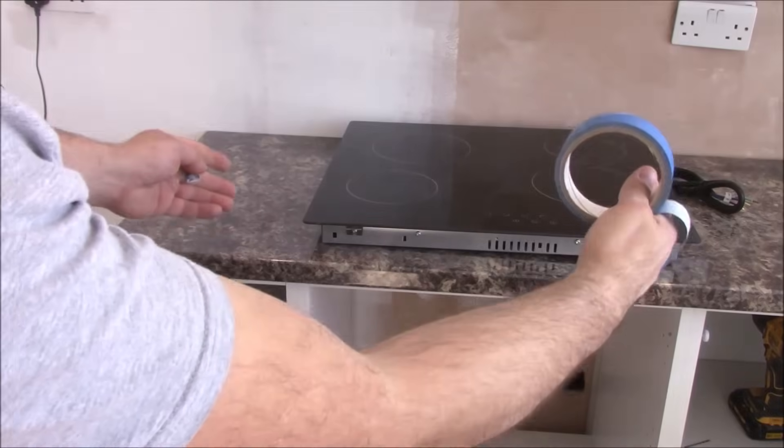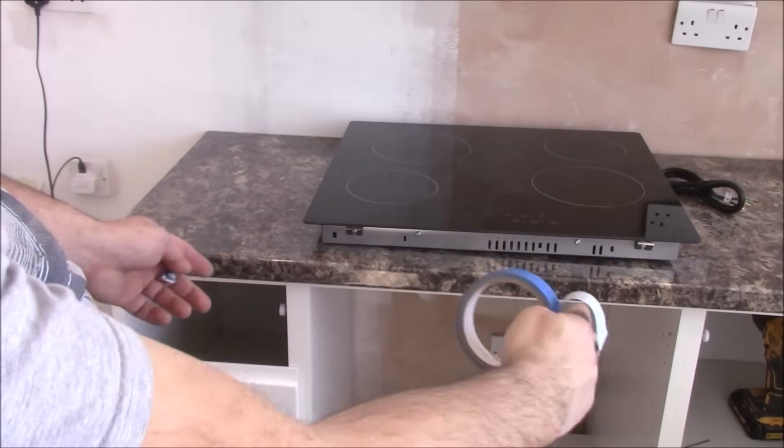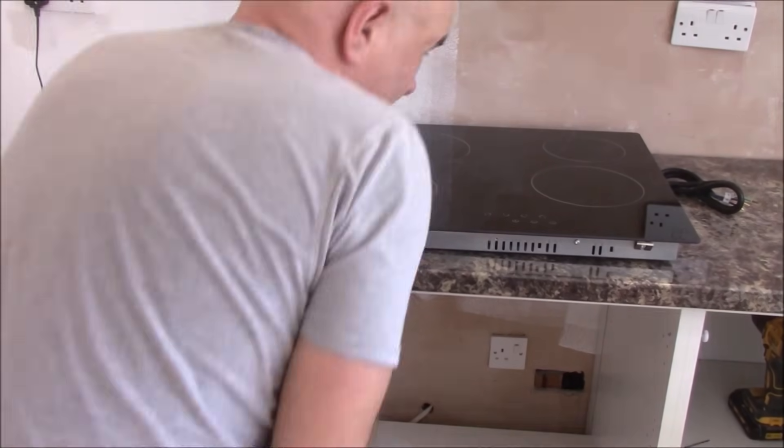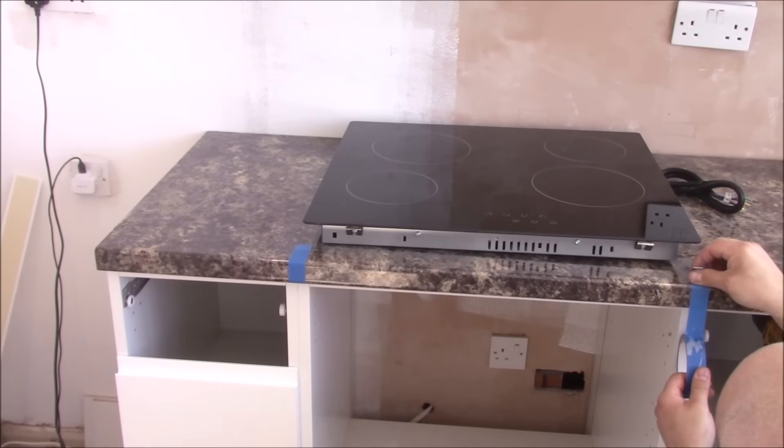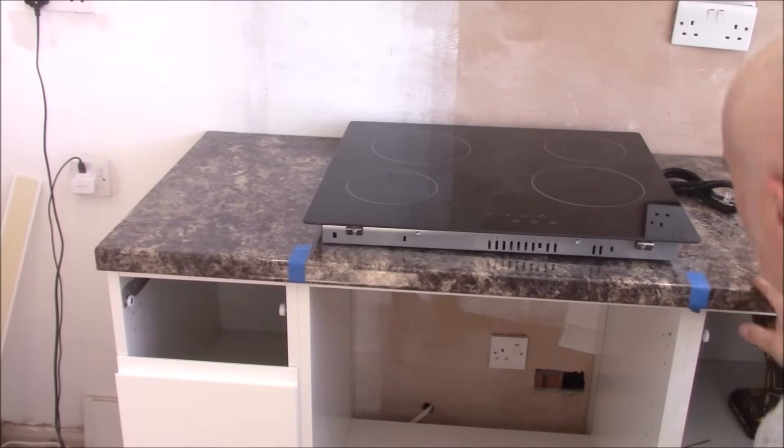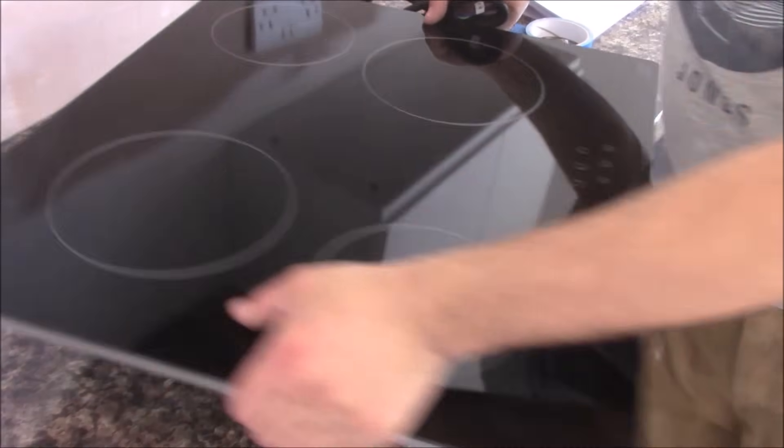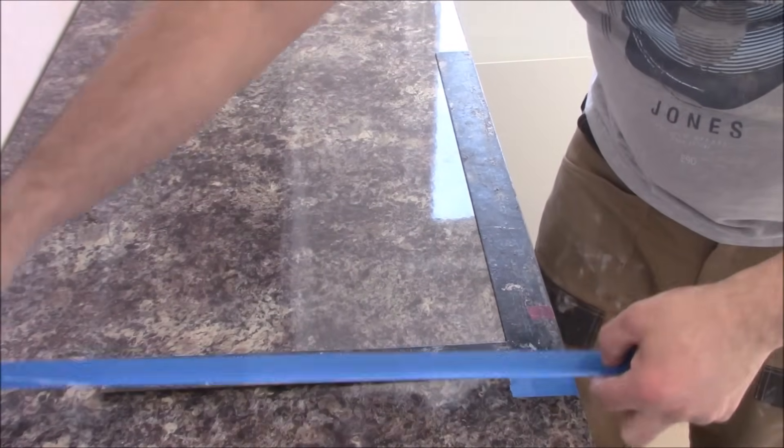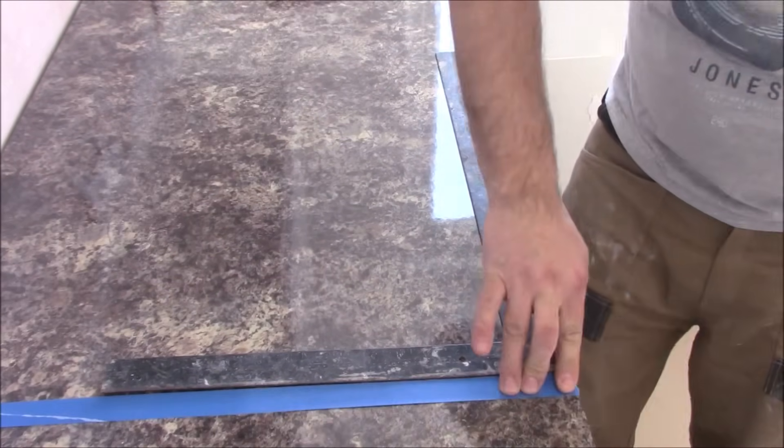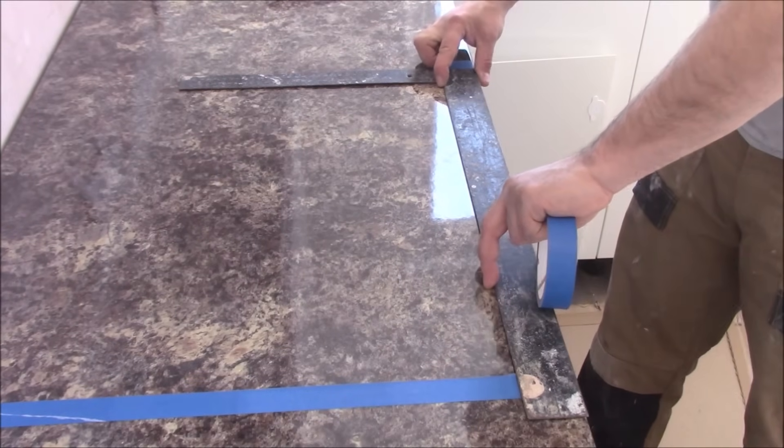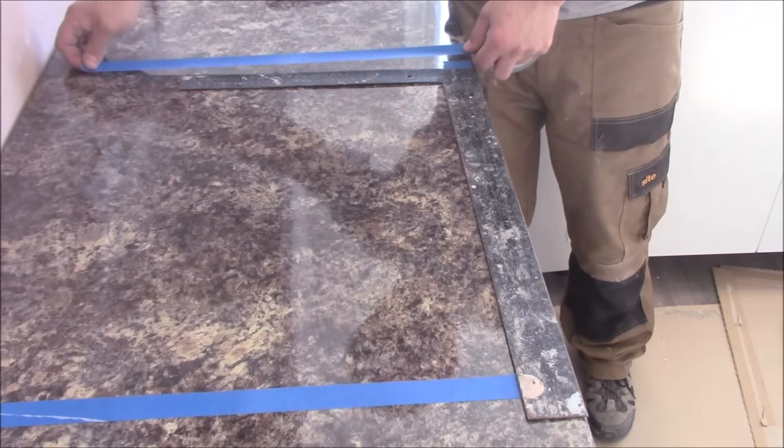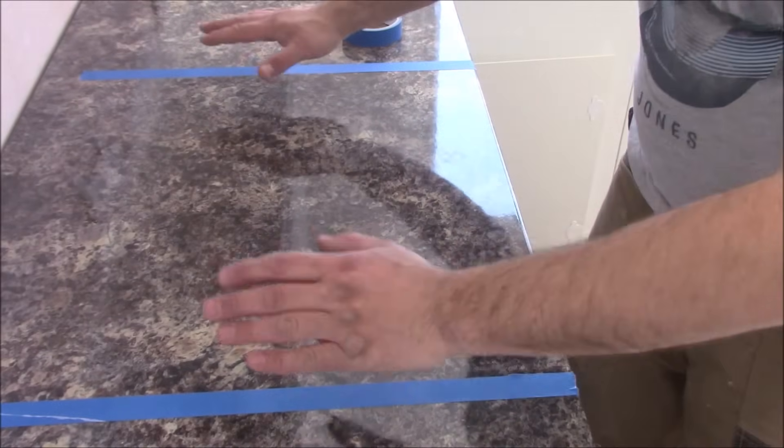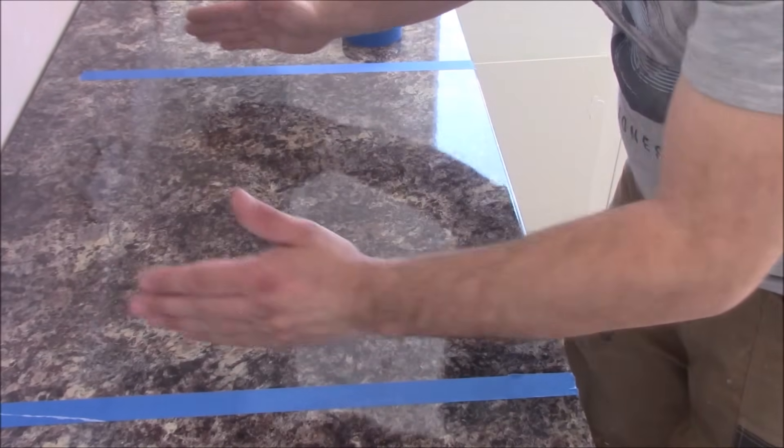First thing I need to position the hob so it sits right in the middle in this cupboard underneath. The cardboard template is between these lines underneath.